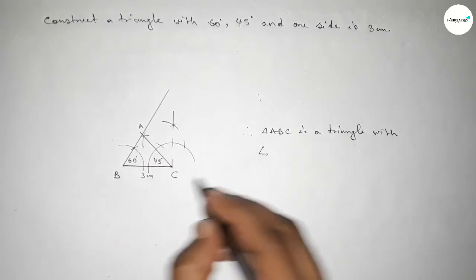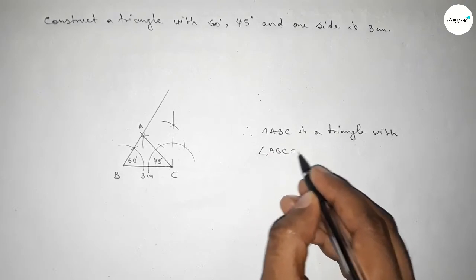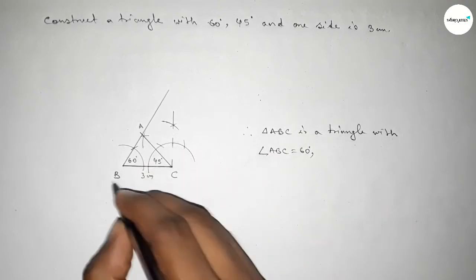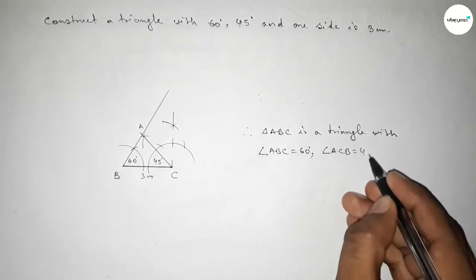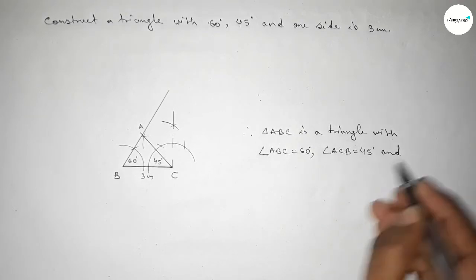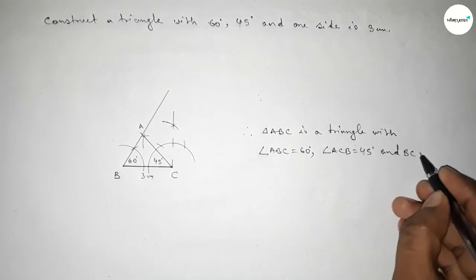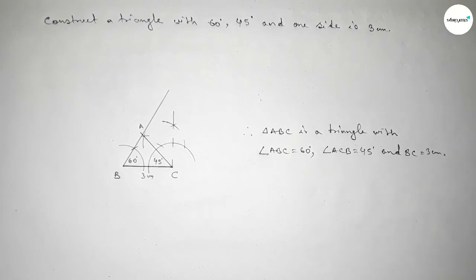So triangle ABC is a triangle with two angles: angle ABC equal to 60 degree, angle ACB equal to 45 degree, and the length of one side BC equal to 3 centimeter. That's all, thanks for watching. If this video is helpful to you, please share it.